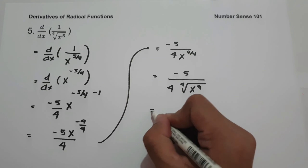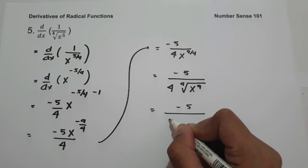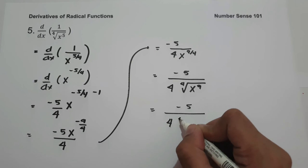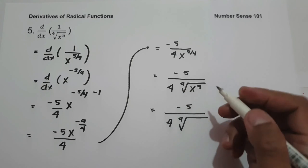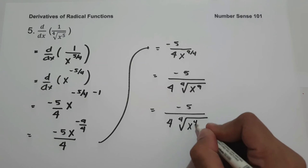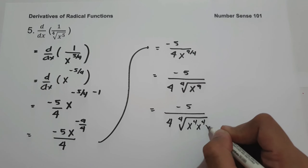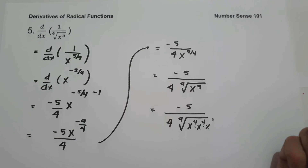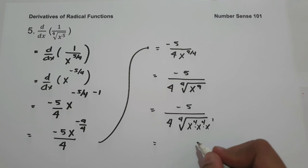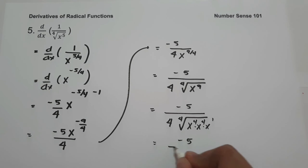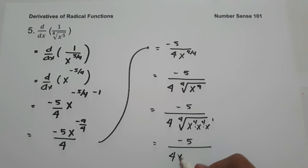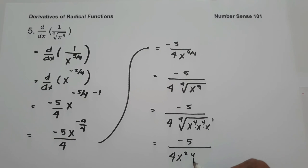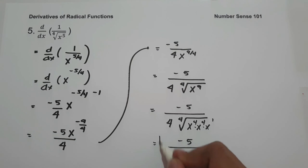To simplify, let us write x raised to positive 9 over 4 in the denominator to eliminate the negative sign, giving us negative 5 over 4x raised to positive 9 over 4. Then let us write it into radical form: negative 5 over 4 times the 4th root of x raised to 9. Dividing the exponent 9 by the index 4, we get x raised to 4 times x raised to 1, totaling 9. So our final answer is negative 5 over 4x squared, times the 4th root of x.